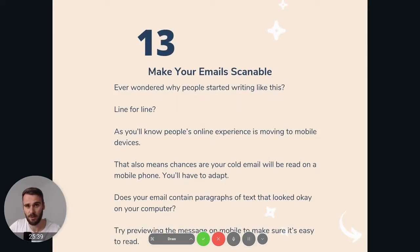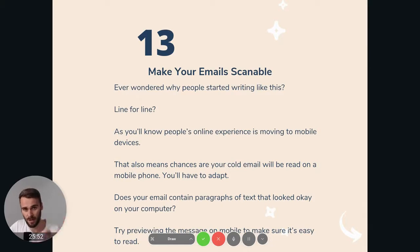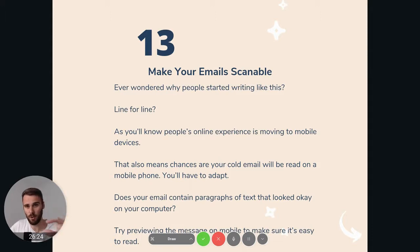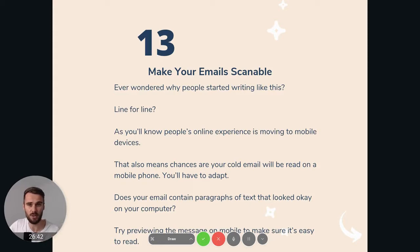Make sure your cold emails are scannable. You've probably noticed people start writing line by line — that's because people's online experience is moving to mobile devices and they're consuming more content on their phones. Cold emails too. A busy CEO on the go who opens your email on his phone needs it to be scannable. You cannot have big chunks of text that look fine when writing in Gmail on your computer but are hard to scan. Use short sentences and small paragraphs — no big blocks of text. If you're writing cold emails like blog posts with big chunks, send it to yourself, open it on your mobile phone, and if it doesn't read naturally, break it up.